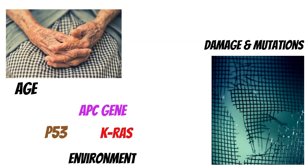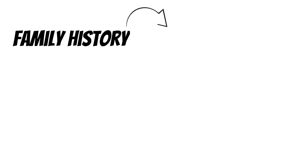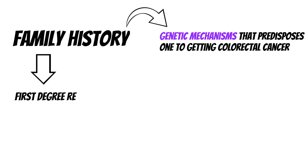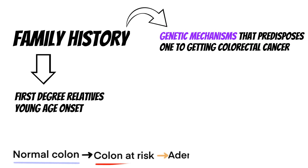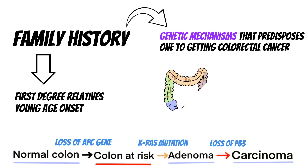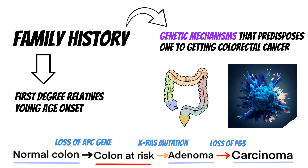Family history certainly plays a role in the development of colorectal cancer. It indicates a genetic mechanism that predisposes you to CRC — a mutation that increases your chance of getting cancer. This is more pronounced when you have first-degree relatives affected, especially if they were diagnosed younger than age 60. If a parent was diagnosed in their 80s it may not mean much, but early-onset cancer in a relative could indicate a genetic condition that predisposes you to CRC.